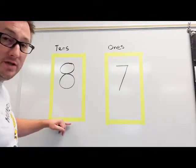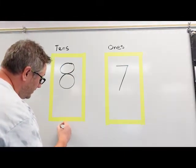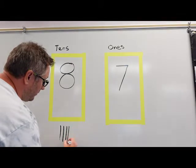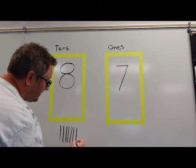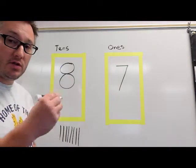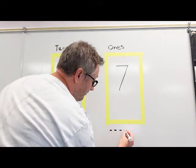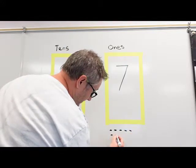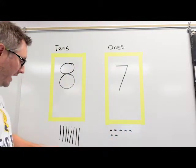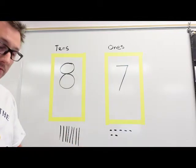Let's make our eight tens using straight lines or quick tens. 10, 20, 30, 40, 50, 60, 70, 80. Now we can build our seven ones using little dots. One, two, three, four, five, six, seven. I have eight tens and seven ones.